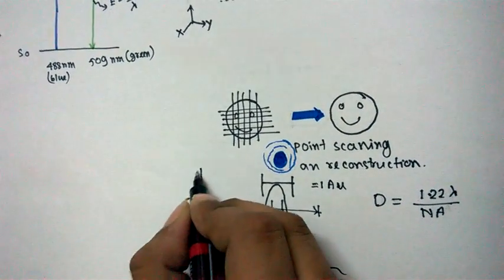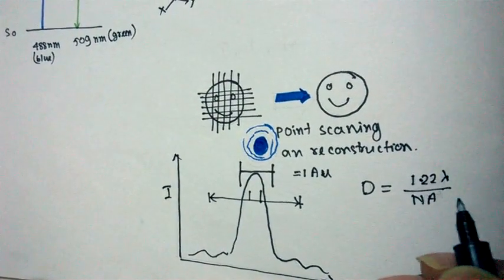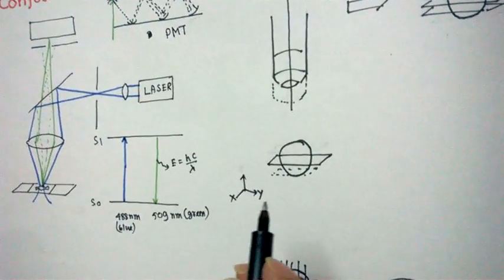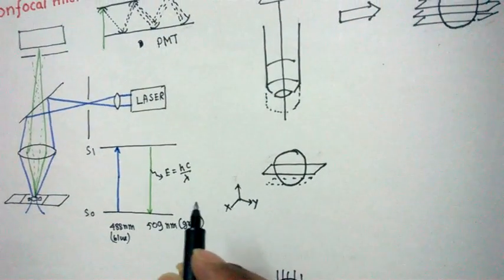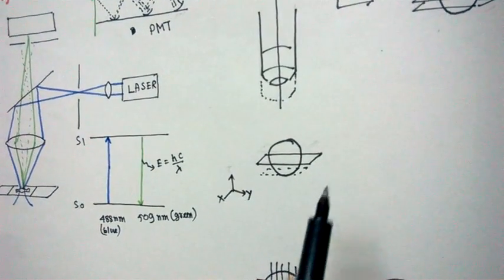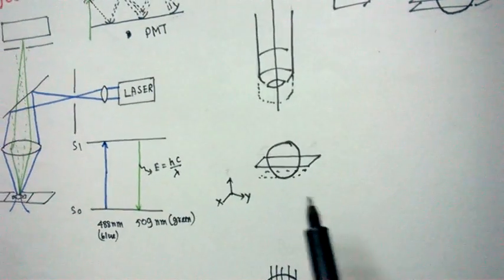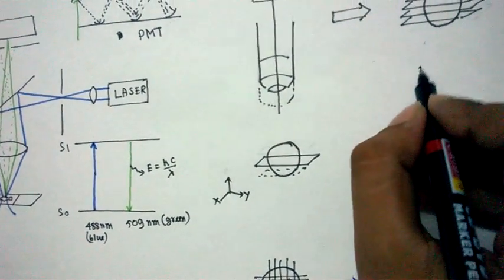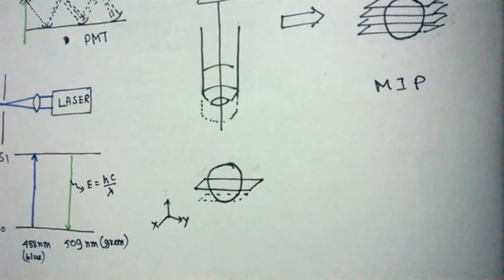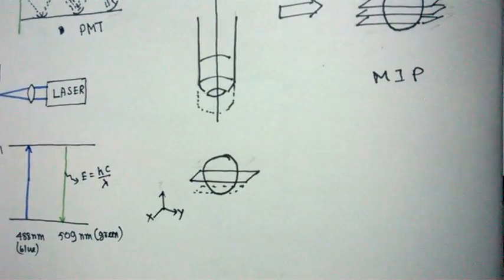In summary, the confocal microscope works like a fluorescent microscope except that it has a pinhole to reduce out-of-focus light. It also has the ability of optical sectioning, by which it can take images plane by plane and reconstruct all the planes to give us a maximum intensity projection — which contains information from all the planes. Hope you liked it, please subscribe, hope you enjoyed, thanks.